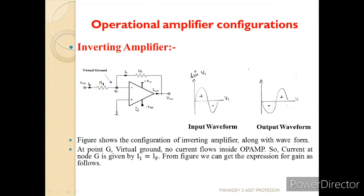This is the configuration of the inverting amplifier. You can observe the negative terminal is given to the VIN through the resistance R1. A feedback resistor is connected across the output through the point G, whereas the positive terminal is connected to the ground. This configuration is called the Inverting Amplifier. Since the input is given to the negative terminal, the output is in 180 degree phase shift.